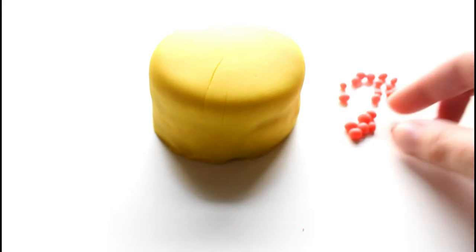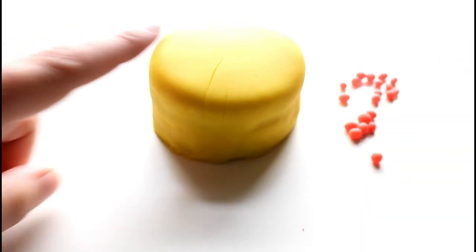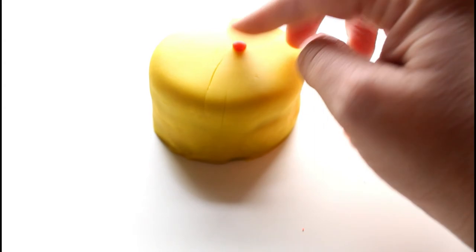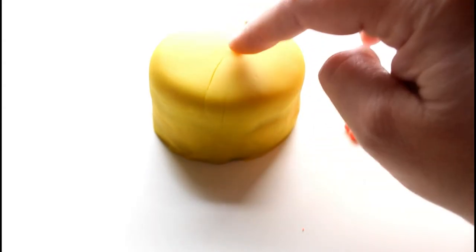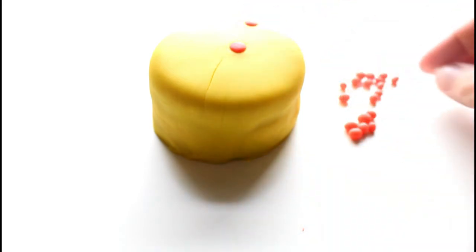Now we have all of our decorations for our cake and we're gonna just put them on top, place it down and press it down a little bit into the play-doh icing.